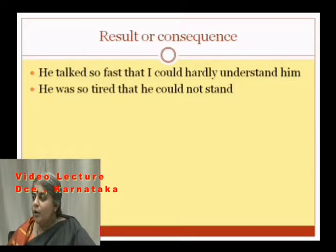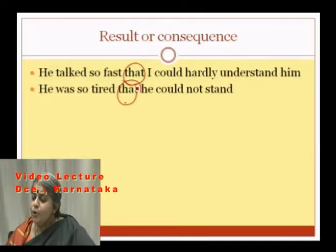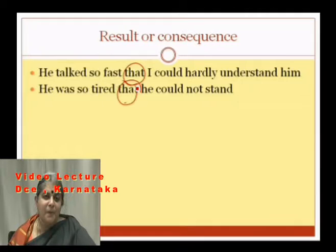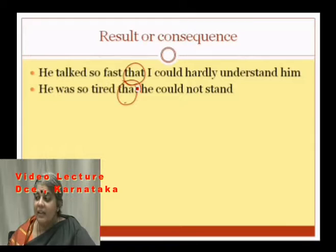'He held my hand lest I should fall' — 'lest' indicates purpose, expressing the reason for an action. Subordinating conjunctions of result or consequence: 'He talked so fast that I could hardly understand him.' 'He was so tired that he could not stand' — 'that' introduces the consequence. These are result conjunctions.